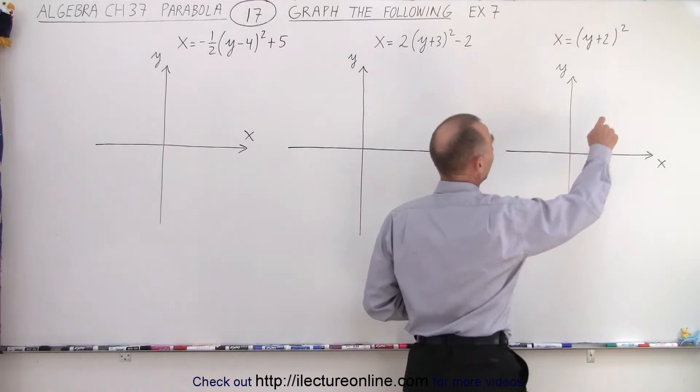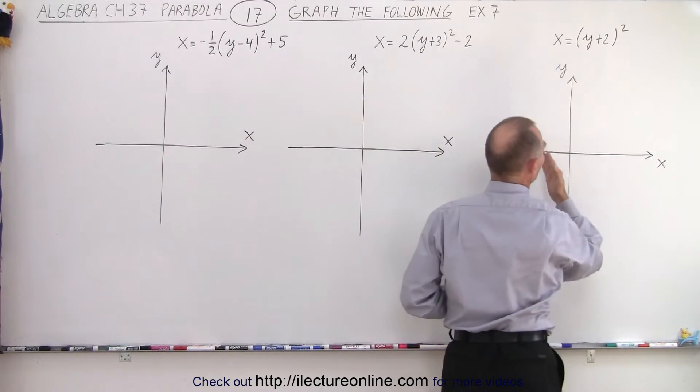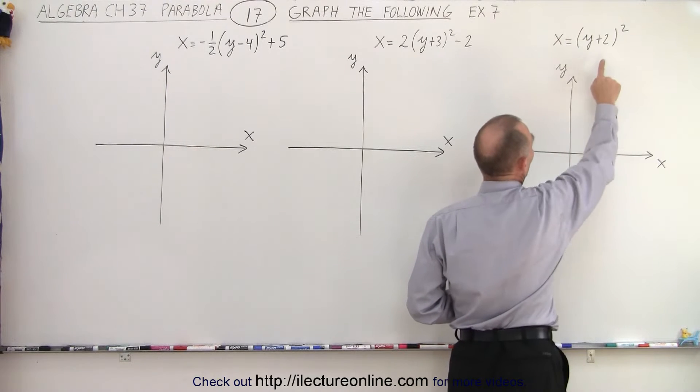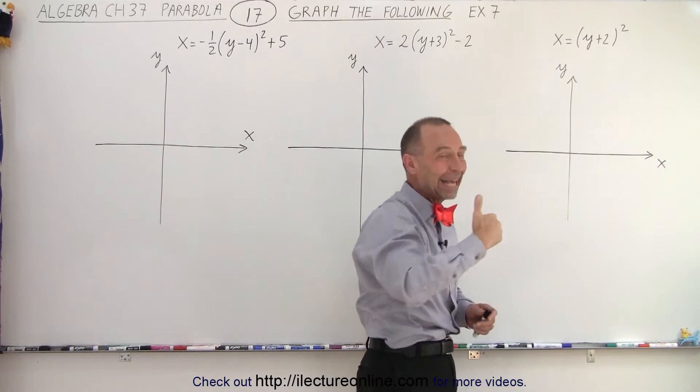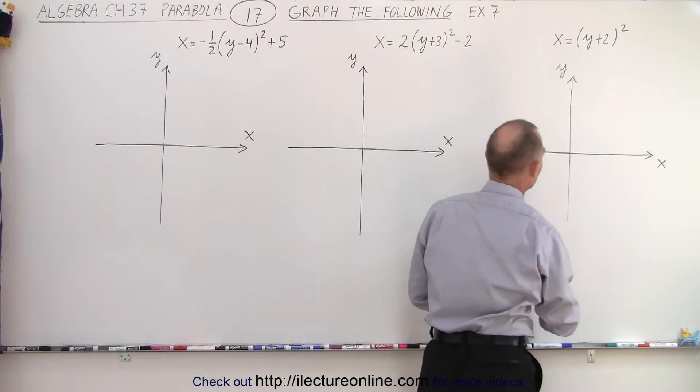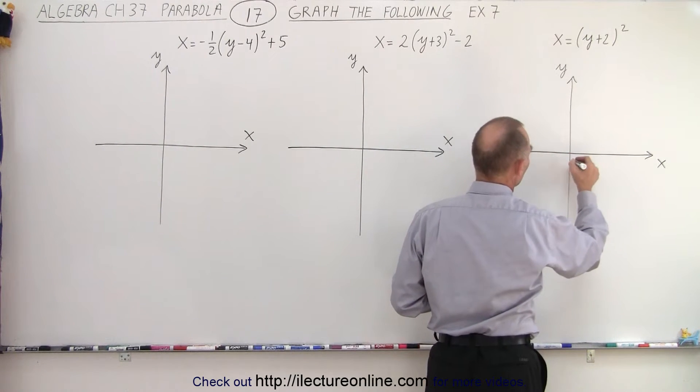So here we notice that we don't have a constant term, so we don't have a shift along the x-axis, but we do have a shift. In this case, since it's y plus 2, that means we have a shift to the negative direction in the y direction.